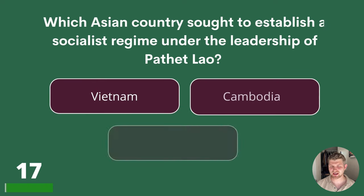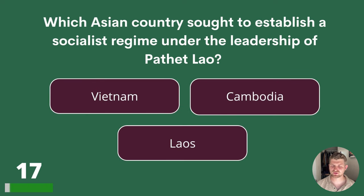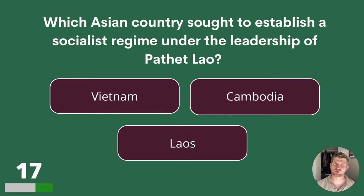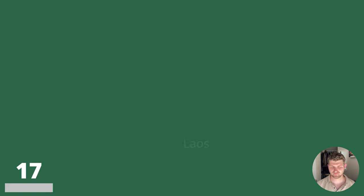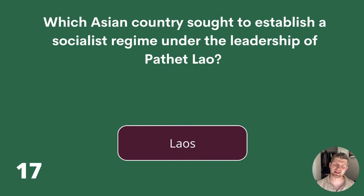Question 17. Which Asian country sought to establish a socialist regime under the leadership of Pathet Lao? Vietnam, Cambodia or Laos? The answer is Laos.